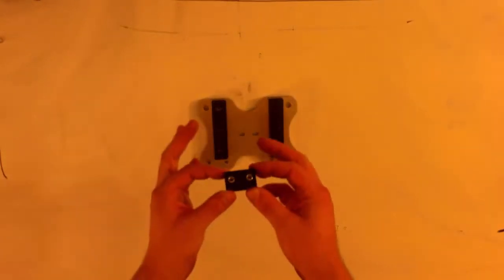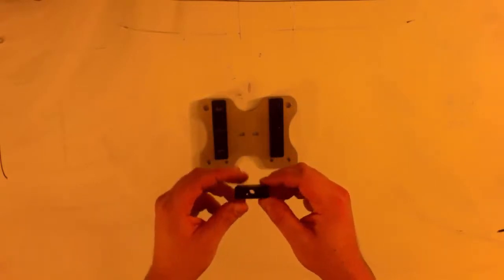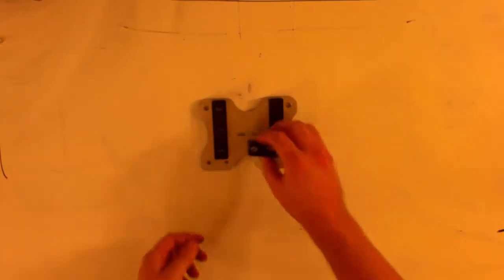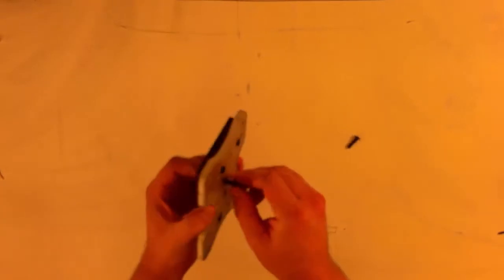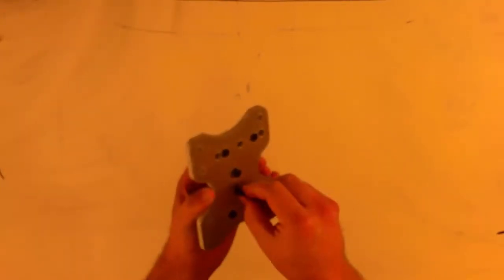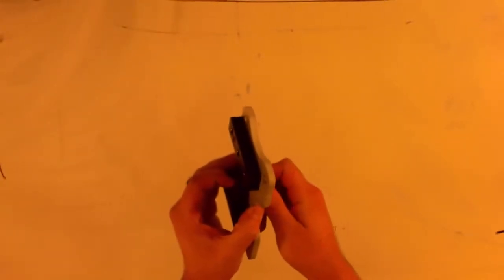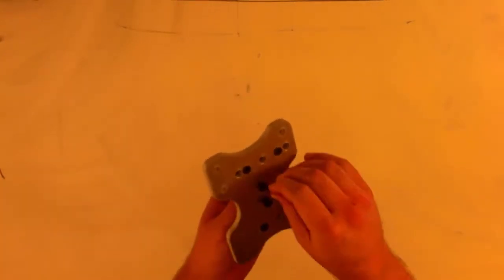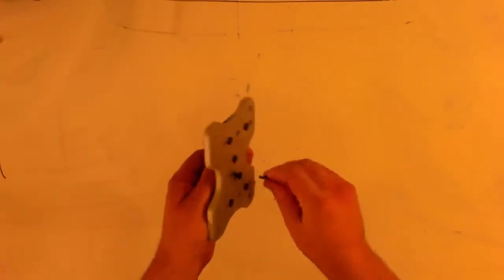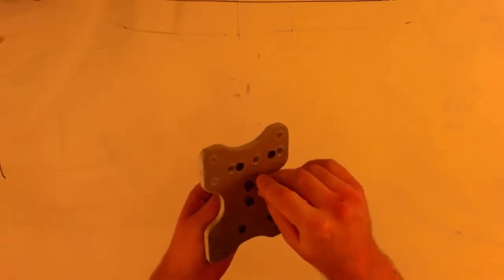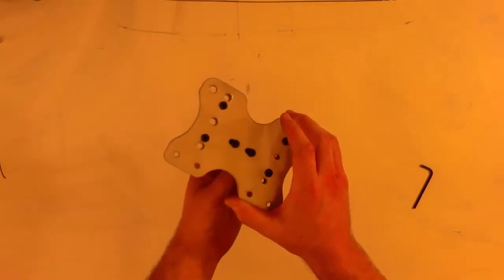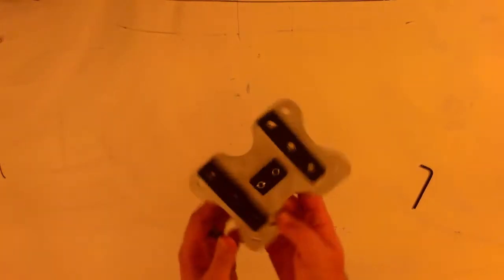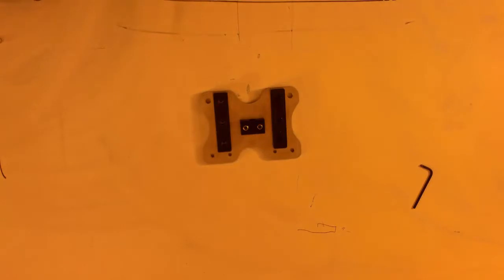Next, you'll want to take your Acme nut block and insert the two M5 Nyloks into the settings there. And this piece will actually be bolted down right to these center P-nut slots. You'll take two more M5x20s and attach this. So you'll want to leave a little place so this can slide back and forth. Later on, we'll bring the Z-axis in and actually center this and lock it down.